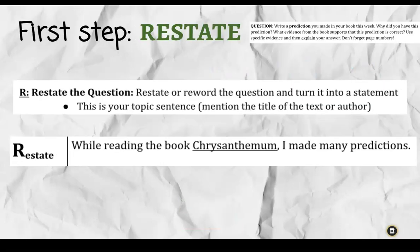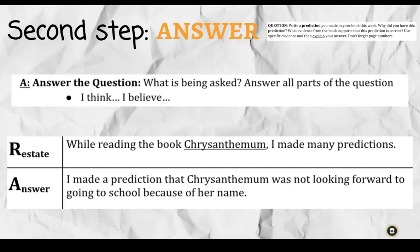The first step is to Restate. The example I have here says: 'While reading the book Chrysanthemum, I made many predictions.' We took the question and flipped and reworded it into our topic sentence, making sure to mention the title. For the Answer step, we put: 'I made a prediction that Chrysanthemum was not looking forward to going to school because of her name.'